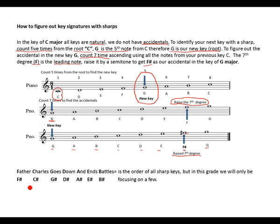The order of sharps is: Father Charles Goes Down And Ends Petals — F sharp, C sharp, G sharp, D sharp, A sharp, E sharp, B sharp. That is the order of all sharp keys. But in this grade, we will only be focusing on a few.